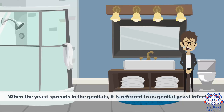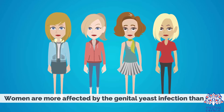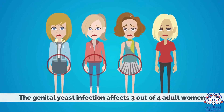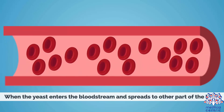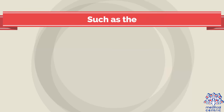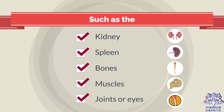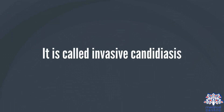When the yeast spreads in the genitals, it is referred to as a genital yeast infection. Women are more affected than men — the genital yeast infection affects 3 out of 4 adult women. When the yeast enters the bloodstream and spreads to other parts of the body — such as the kidney, spleen, bones, muscles, joints, or eyes — it is called invasive Candidiasis.